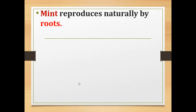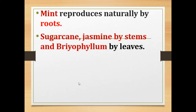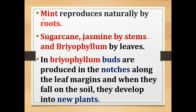The first one is natural vegetative propagation. We can see here the mint plant, which can reproduce naturally by root. The root of the mint develops into a new young mint plant. In bryophyllum, the leaf part of the plant is where the new plant can develop.